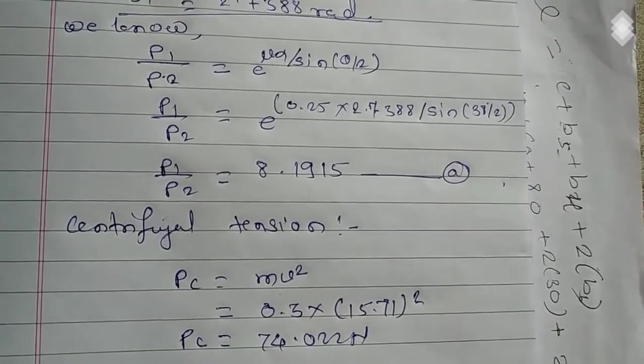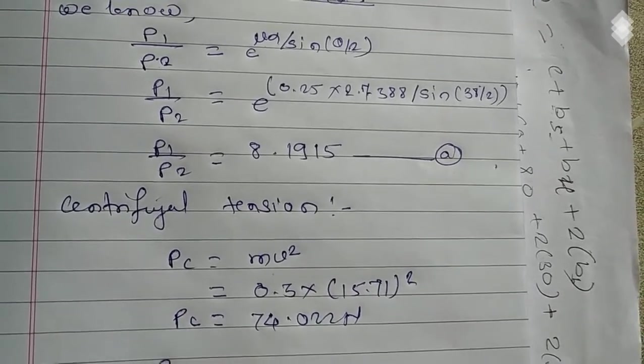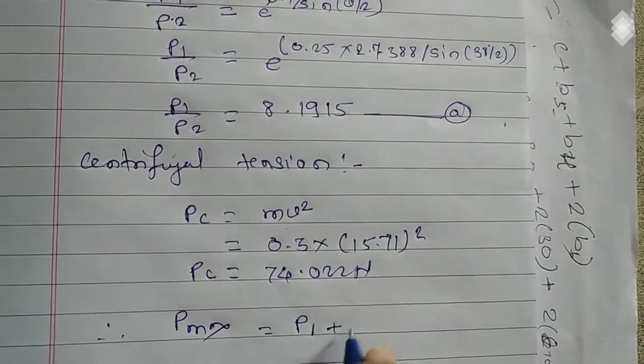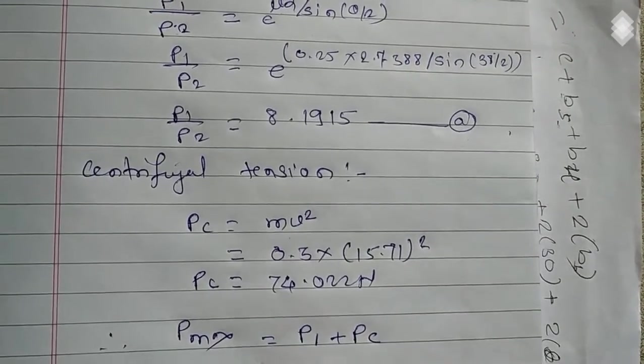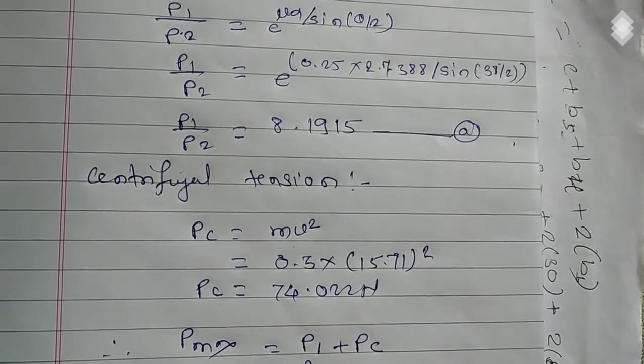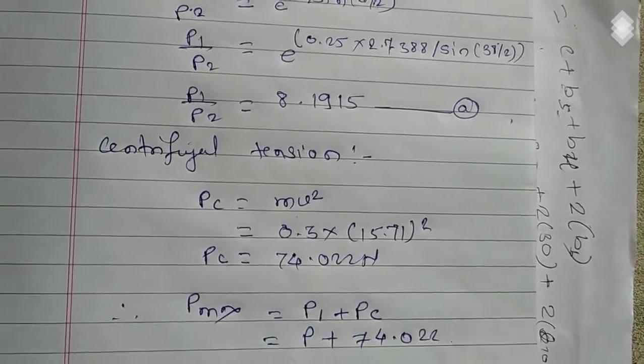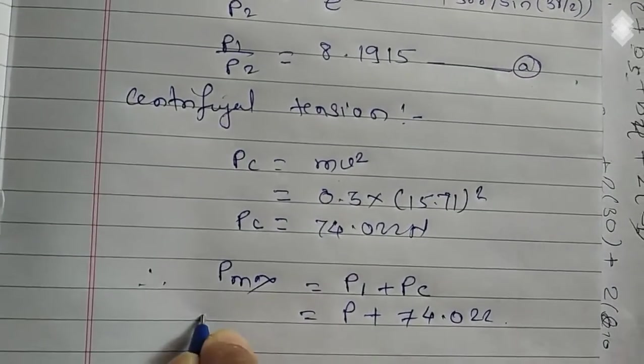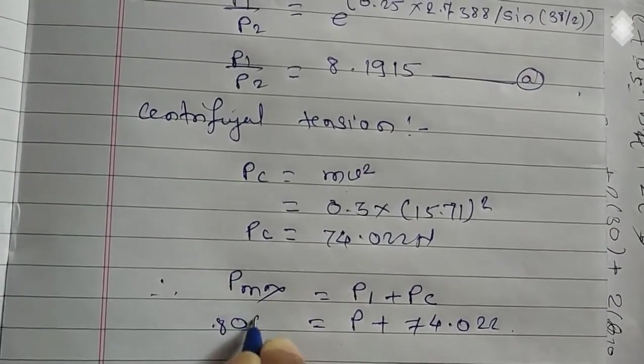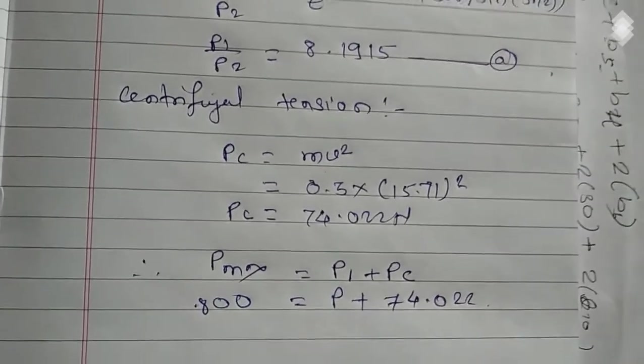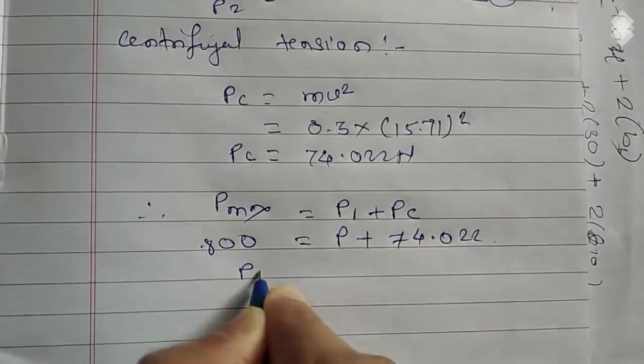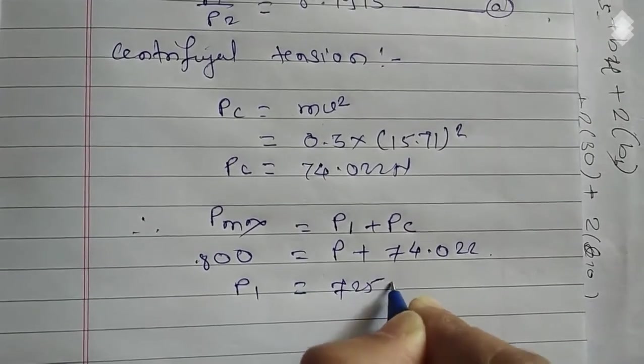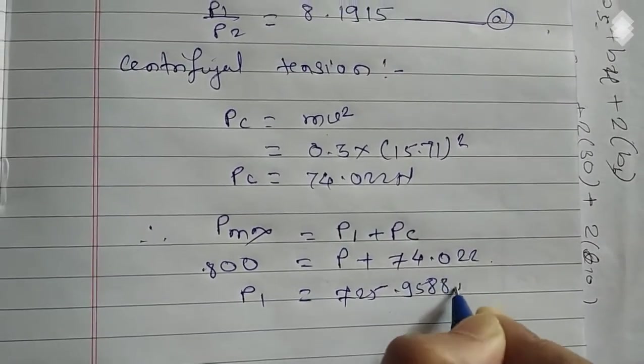And we know that maximum tension in belt is equal to P1 plus centrifugal tension. So only P1 is unknown. Put the value of maximum tension which is given in the statement. P1 is equal to 725.9588 newton.